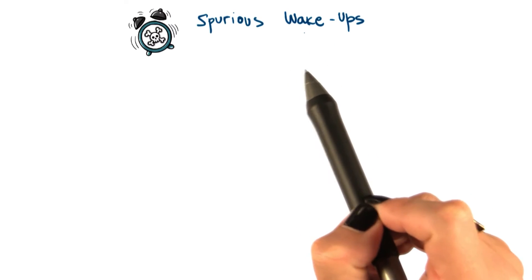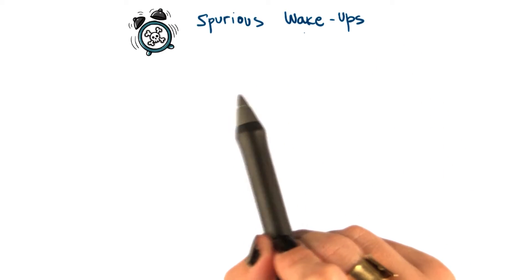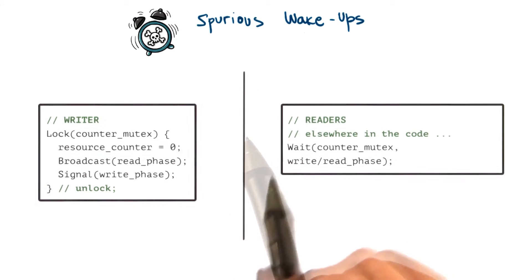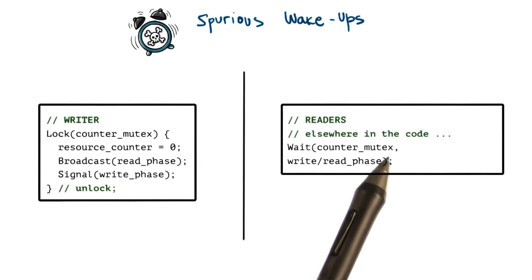One pitfall that doesn't necessarily affect correctness but may impact performance is what we call spurious or unnecessary wake-ups. Let's look at this code for a writer and readers.